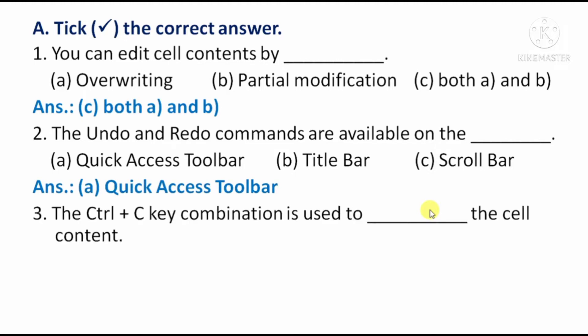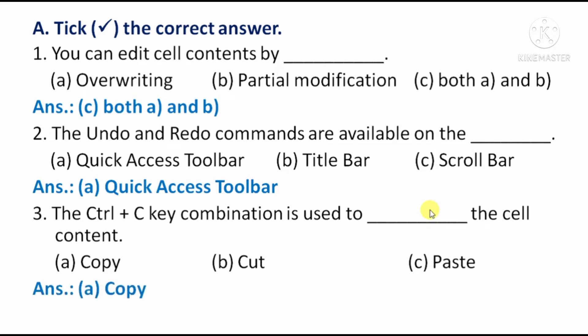The Ctrl+C key combination is used to do what with the cell content? Option A: Copy. Option B: Cut. Option C: Paste. The right answer is Option A, Copy.